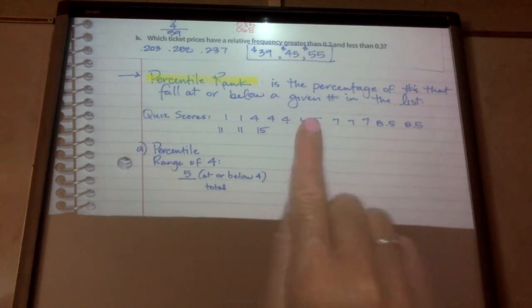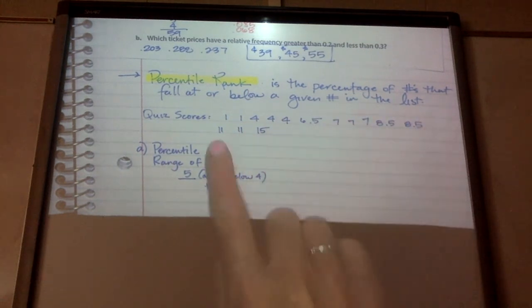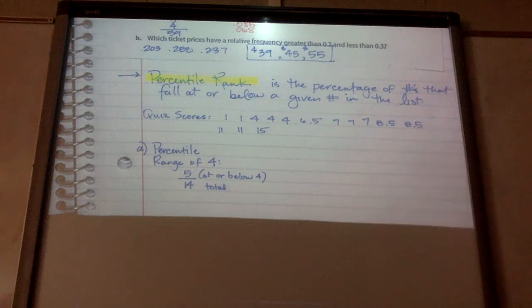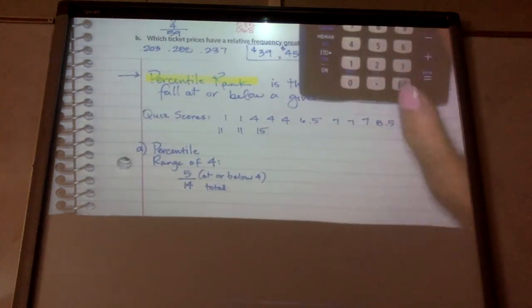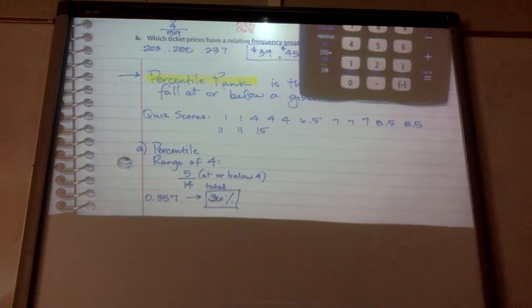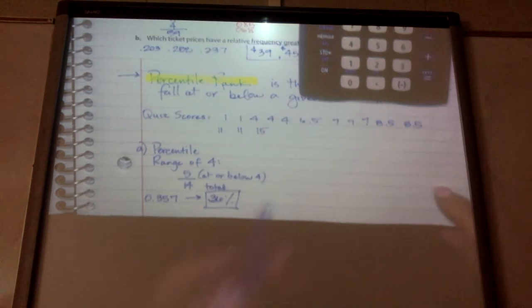And I'm going to divide that by my total number of scores. So if I count this up, 1, 2, 3, 4, 5, 6, 7, 8, 9, 10, 11, 12, 13, 14. There were 14 total scores. If I take my calculator, 5 divided by 14, I get 0.357. So that would be 36, if I rounded, percent. So if you scored a 4, you were higher than 36% of the class.